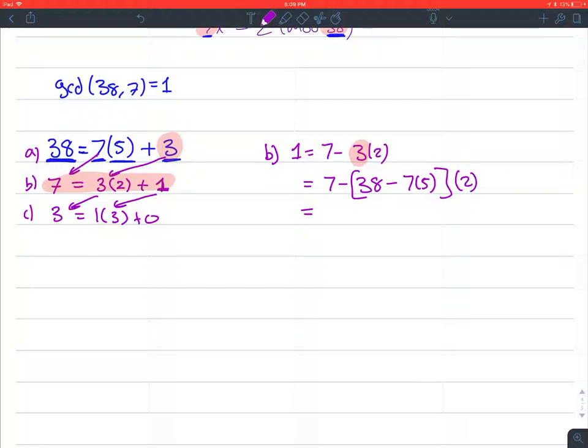So then now we can simplify it. So 7 minus, and then we have the 2 distributed. So it's times 2 minus 7, and then the 5 times 2 is 10. So now I have 10 7s, and then I have the 7, so I have 10 7s right here and I have one more 7 here. And this is positive because the negative distributed. So I have 11 7s, and then minus 2 38s.